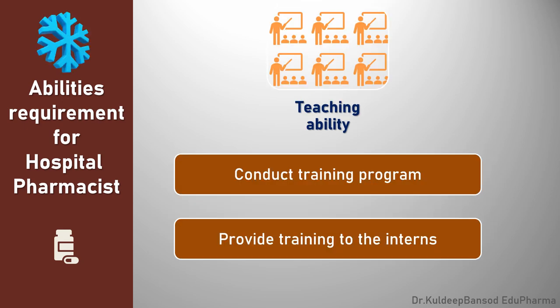Another important ability is teaching ability. He should conduct various programs to carry out a continuous training program to train the staff, trainees, or interns. The chief pharmacist should maintain constant liaison with the academic institution from which students come for practical training and submit a report at the end of the training period. In this way, these abilities are very much important to work as a hospital pharmacist.